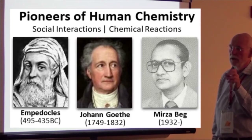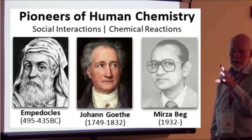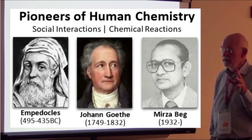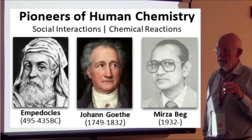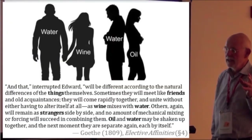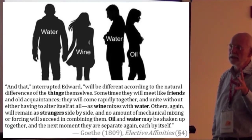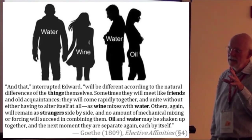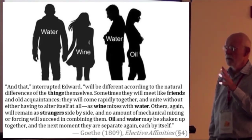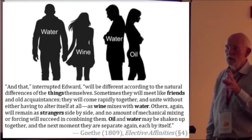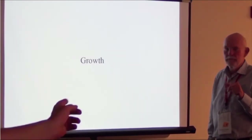So this is actually the first one who started this. And this theory was long forgotten, and Goethe found it by chance through his studies, and he thought it was a brilliant idea. He was actually trying to understand chemistry, and he thought he knew quite well about social systems because he had much experience with people.